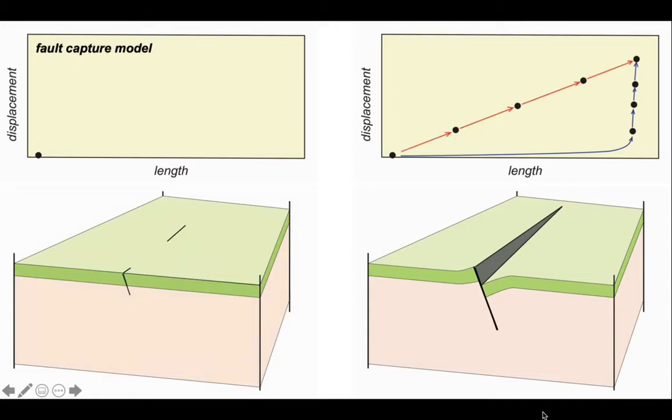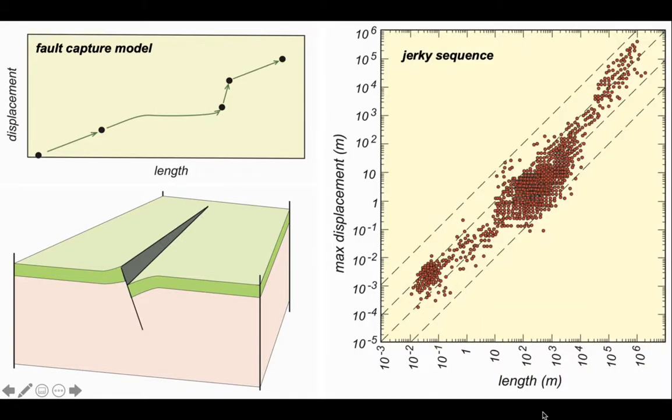We can put them together on the right hand side, and now finally look at another model for fault growth, which is the fault capture model. This says that we start off with little faults and they'll combine together to make a long fault. So here they go - they're growing self-similarly, growing towards each other, and then they capture one another, acquire some length, then accumulate some more displacement and then keep going. So that's the fault capture model. The fault capture model would generate a jerky path up this graph.